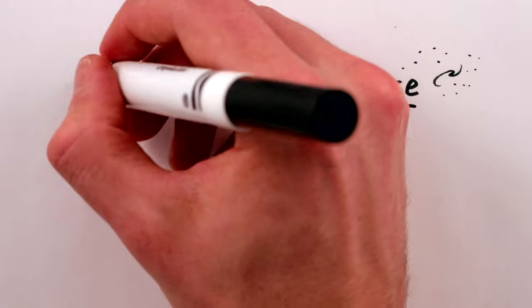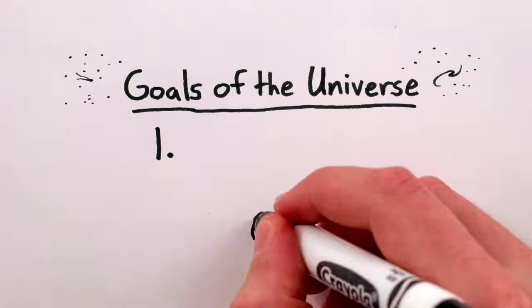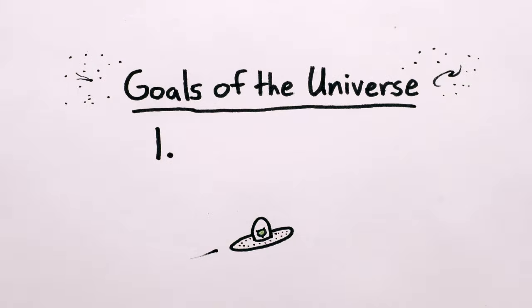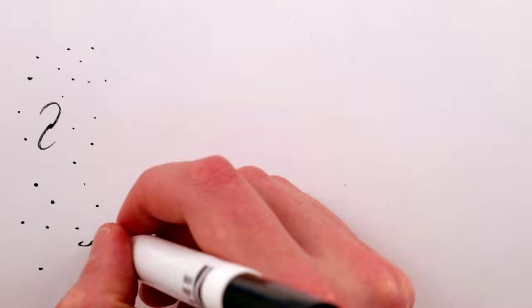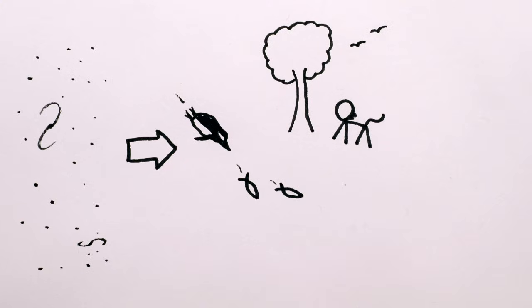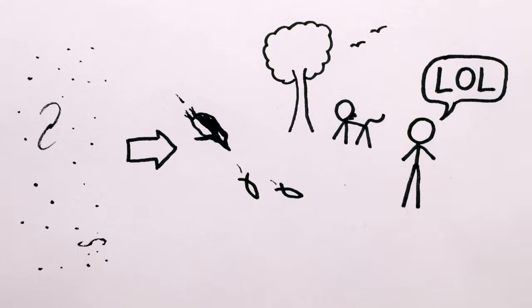To assert that the universe has a purpose implies a desired outcome, but who would do the desiring? And what would a desired outcome be? That carbon-based life is inevitable? Or that sentient primates are life's neurological pinnacle?